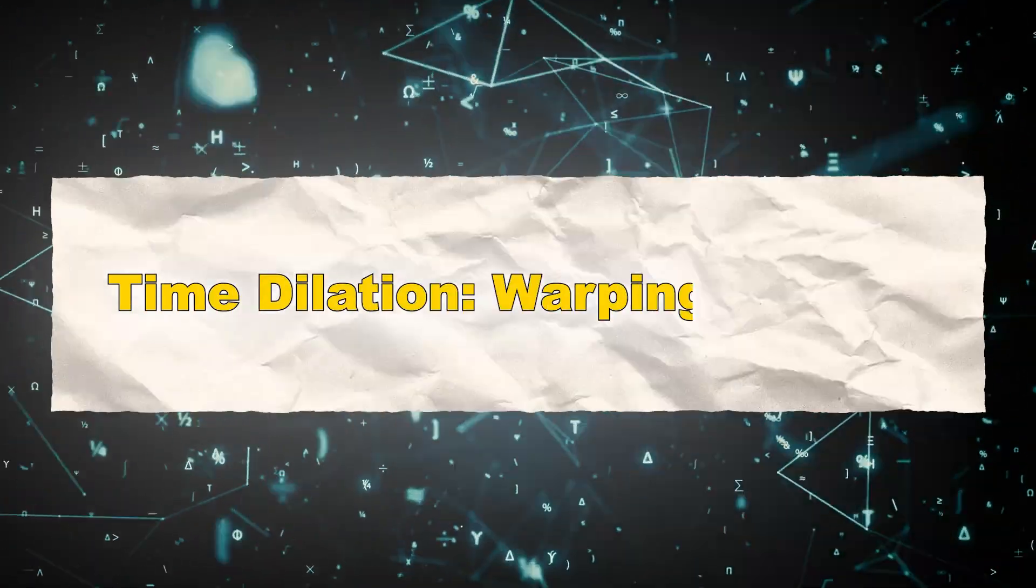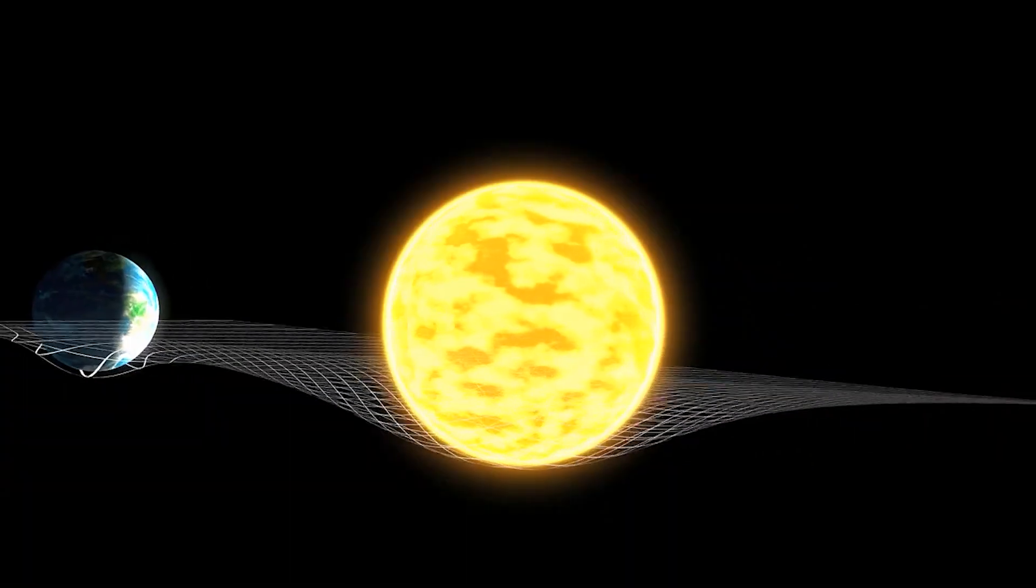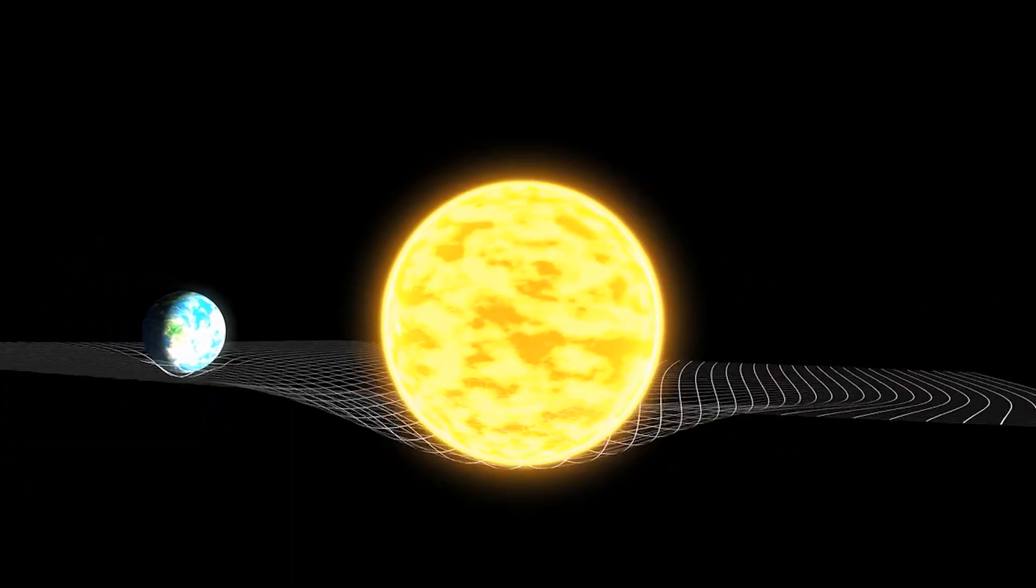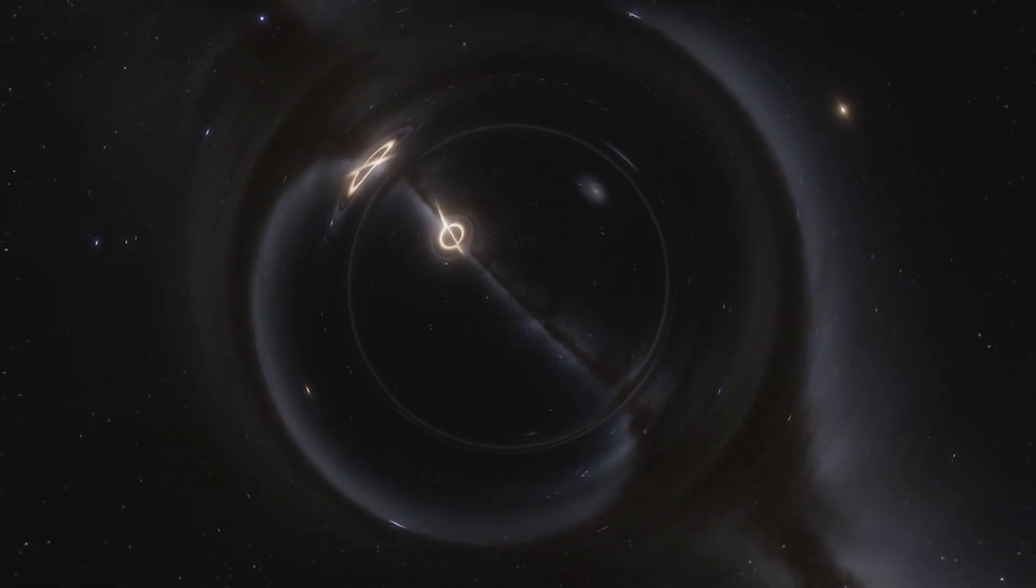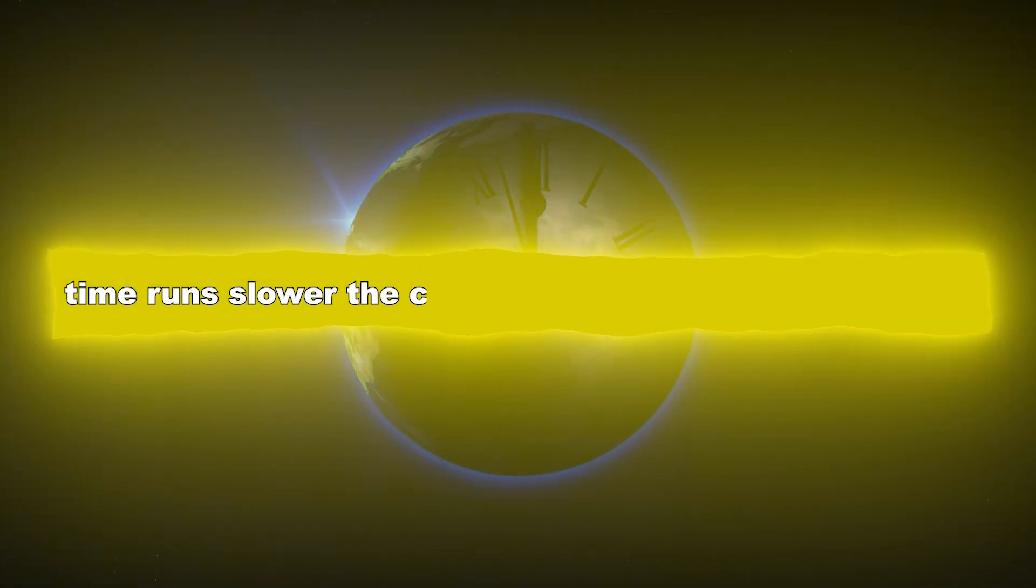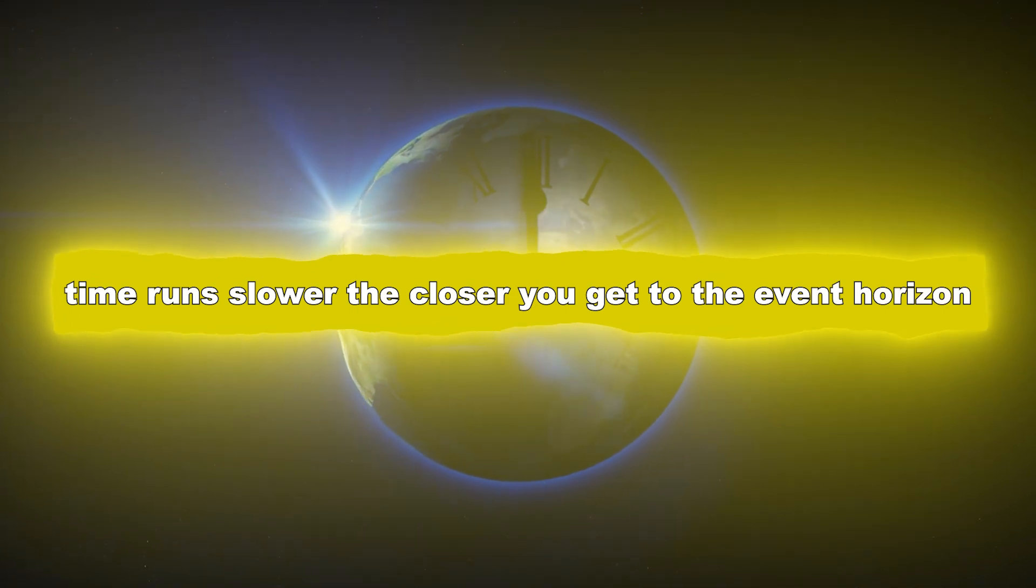Time dilation - Warping of time: Einstein's theory of general relativity tells us that massive objects warp the fabric of space-time. Near a black hole, this effect is extreme. Time dilation occurs, meaning that time runs slower the closer you get to the event horizon.